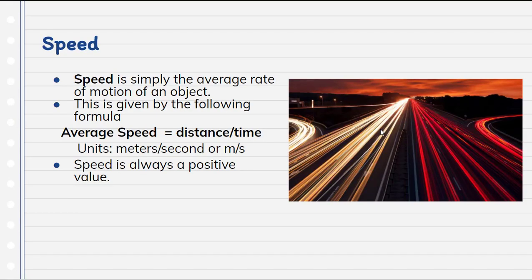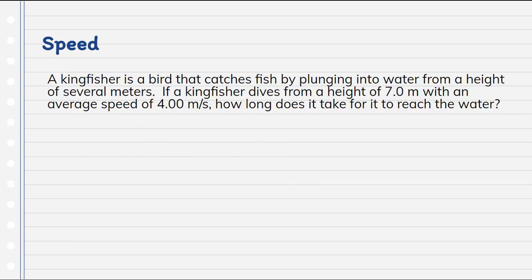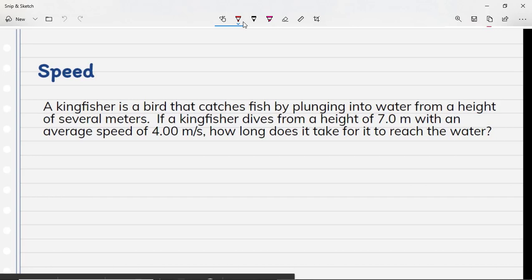Speed is simply the average rate of motion of an object, given by the formula: average speed equals distance over time — distance, not displacement. It's really important to keep those separate. The units are meters per second. Speed is always a positive value because we don't care about direction. A kingfisher is a bird that catches fish by plunging into the water. If a kingfisher dives from a height of 7.0 meters with an average speed of 4.00 meters per second, how long does it take to reach the water?